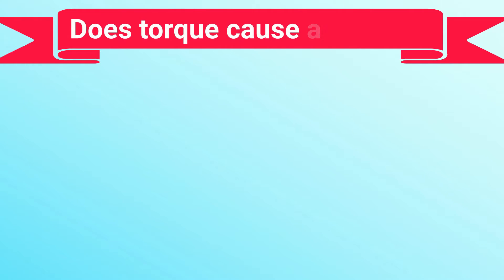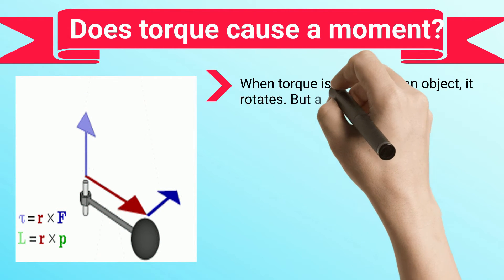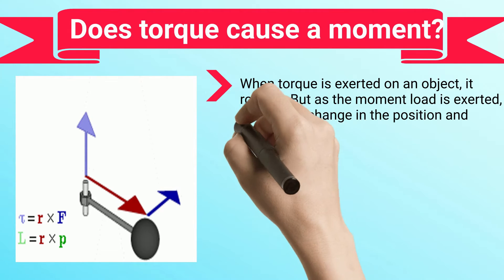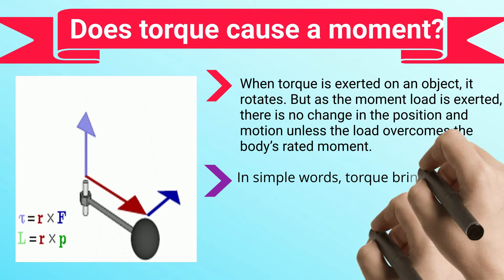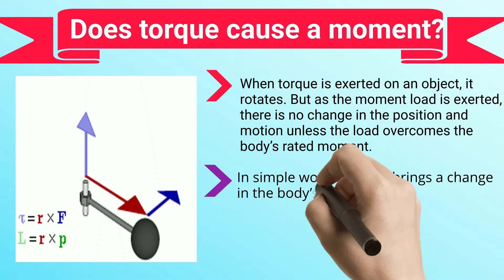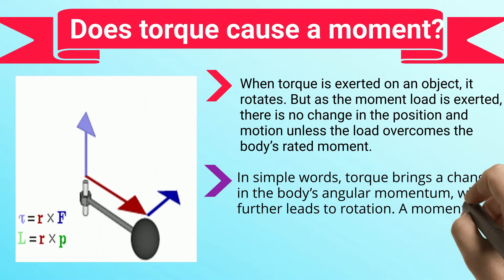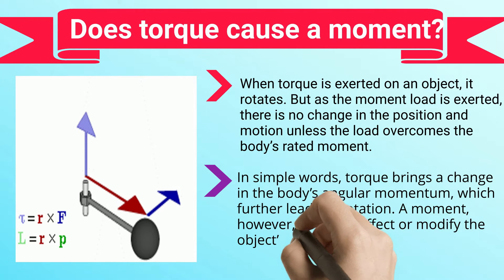Does torque cause a moment? When torque is exerted on an object, it rotates, but as the moment load is exerted, there is no change in the position and motion unless the load overcomes the body's rated moment. In simple words, torque brings a change in the body's angular momentum which further leads to rotation. A moment, however, does not affect or modify the object's angular momentum.